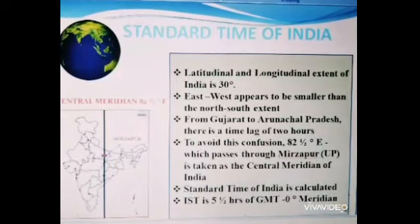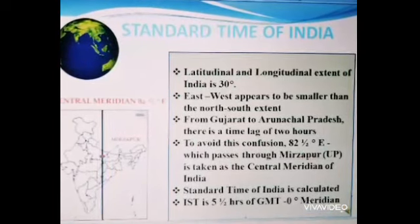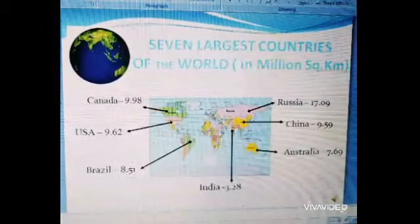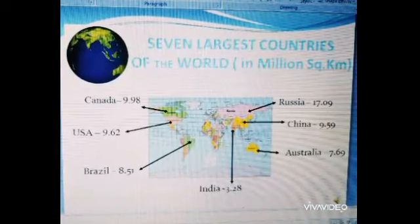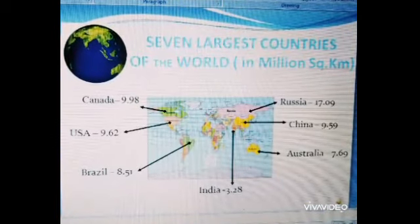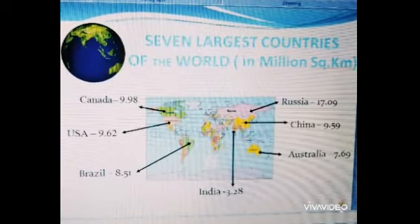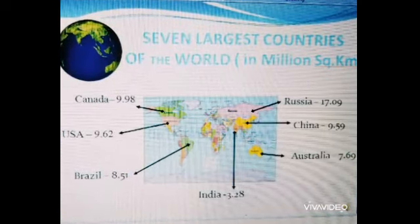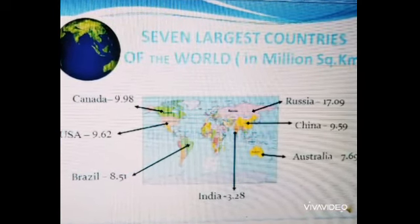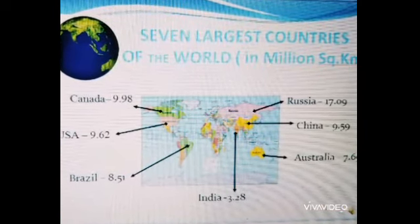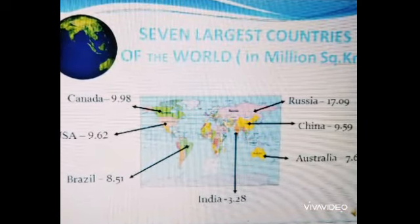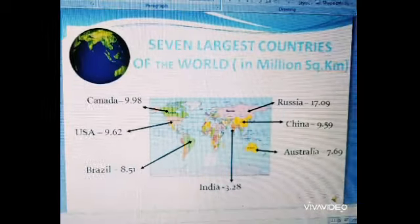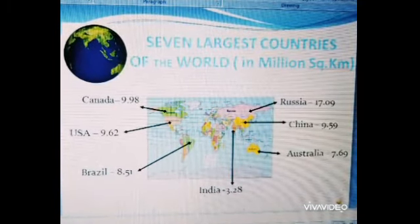The seven largest countries of the world are: Russia, Canada, USA, China, Brazil, Australia and India. India is the seventh largest country in the world.